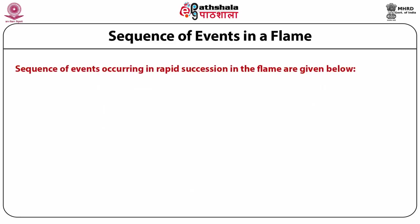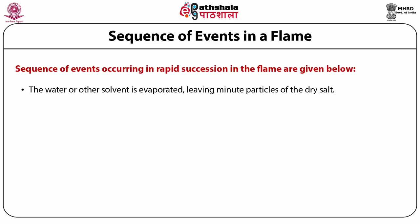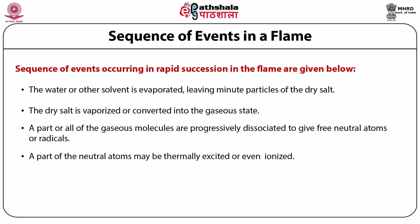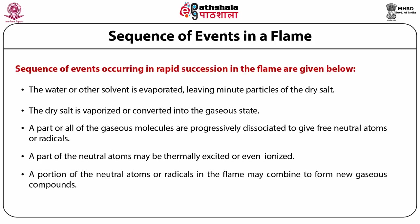The sequence of events in the flame in rapid succession: the water or other solvent is evaporated, leaving minute particles of the dry salt. The dry salt is vaporized into a gaseous state. Part or all of the gaseous molecules are progressively dissociated to give free neutral atoms or radicals. A part of the neutral atoms may be thermally excited or even ionized, and a portion of the neutral atoms or radicals may combine to form new gaseous compounds.